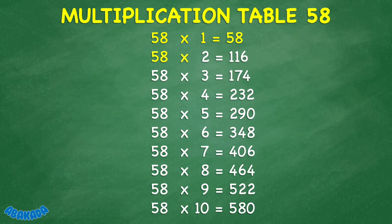58 times 2 equals 116. 58 times 3 equals 174. 58 times 4 equals 232. 58 times 5 equals 290. 58 times 6 equals 348. 58 times 7 equals 406.